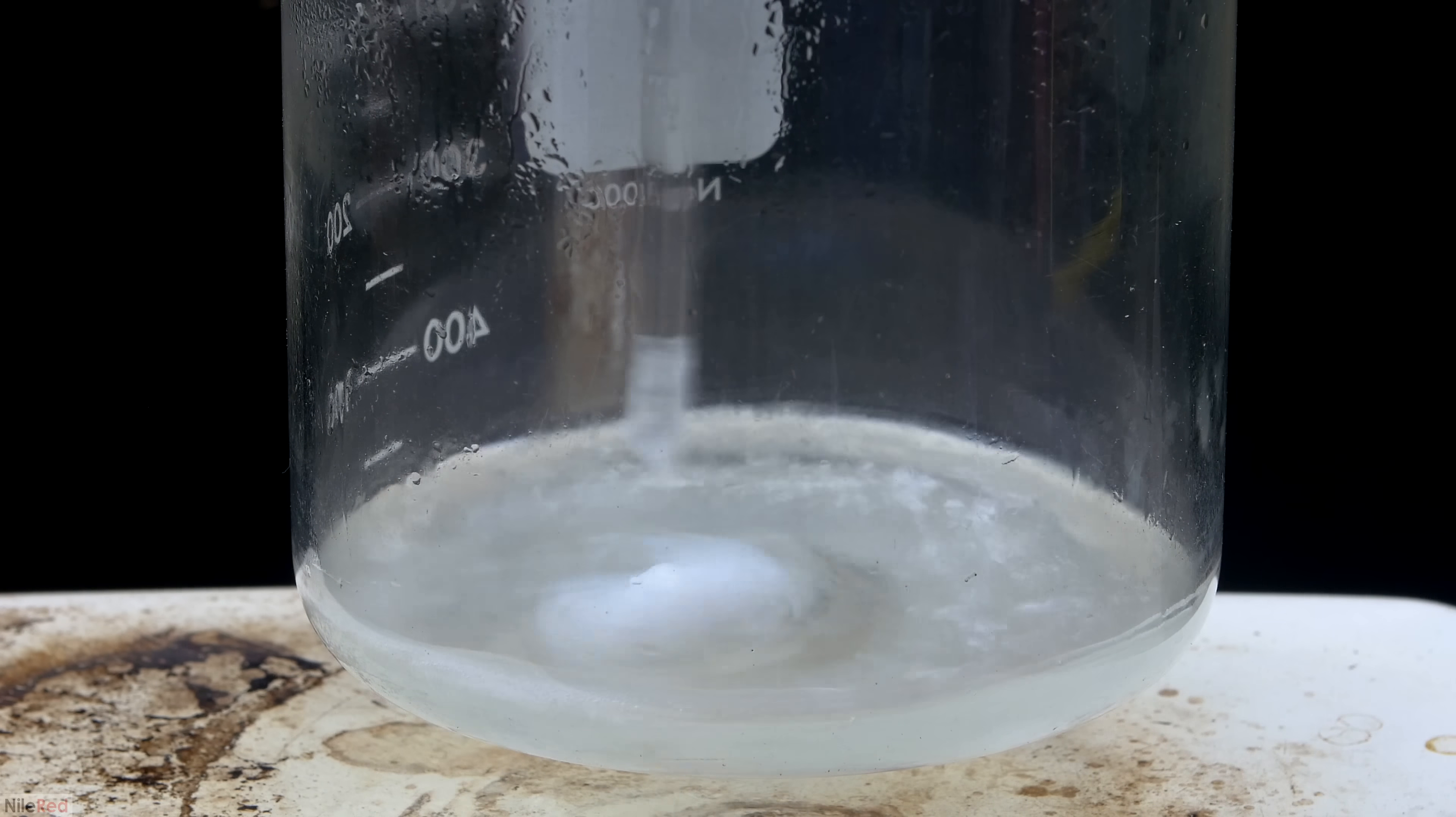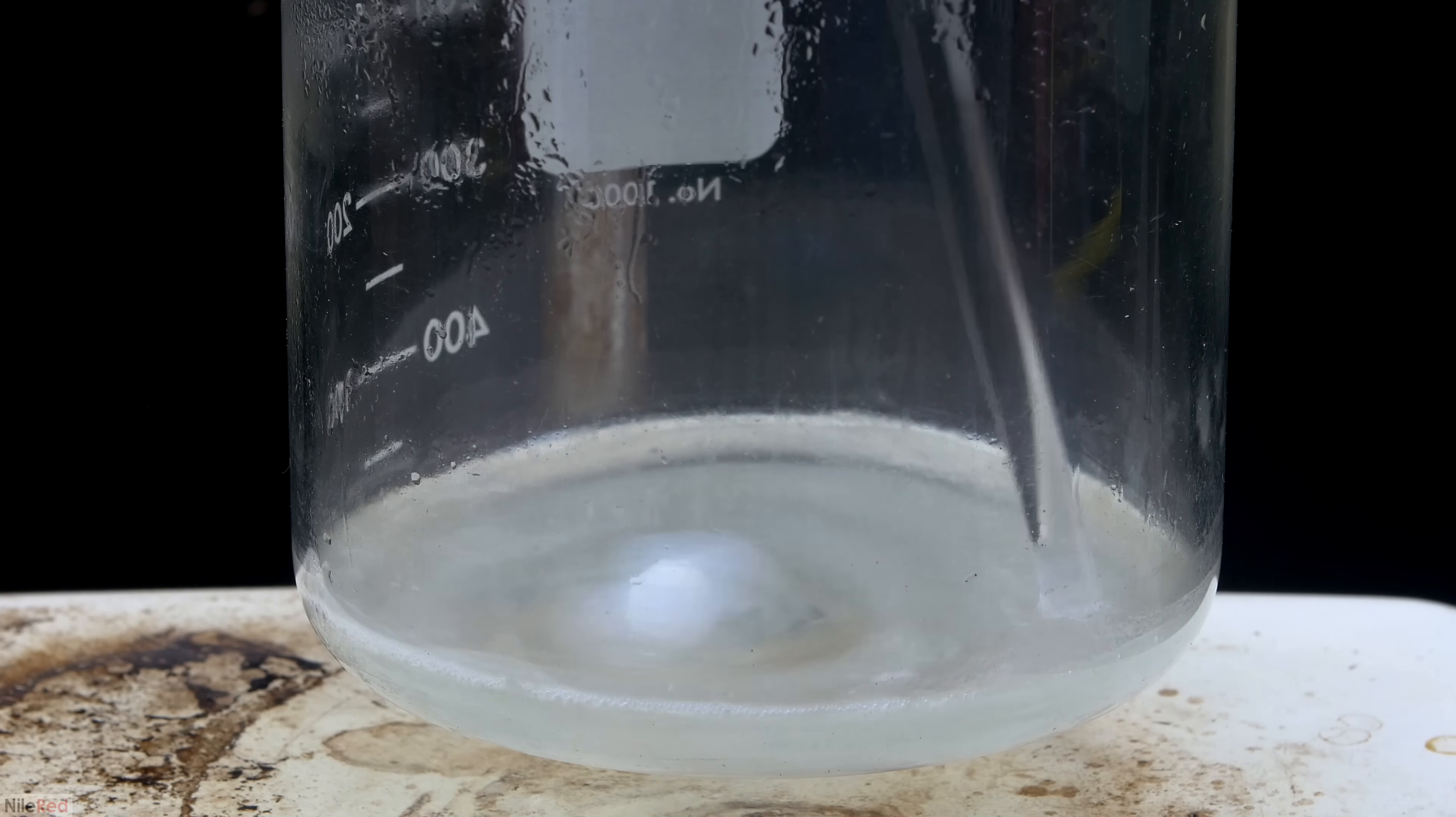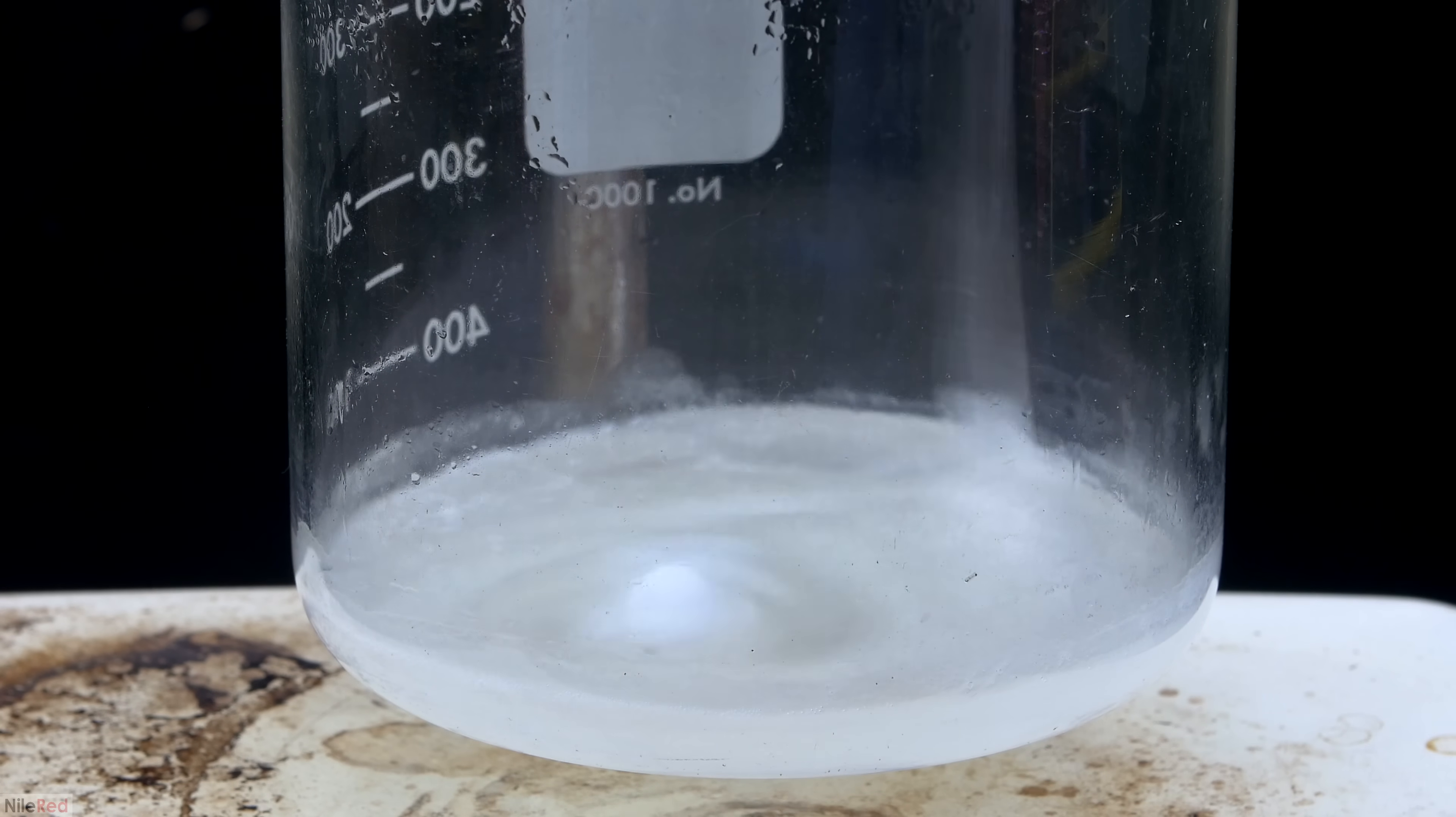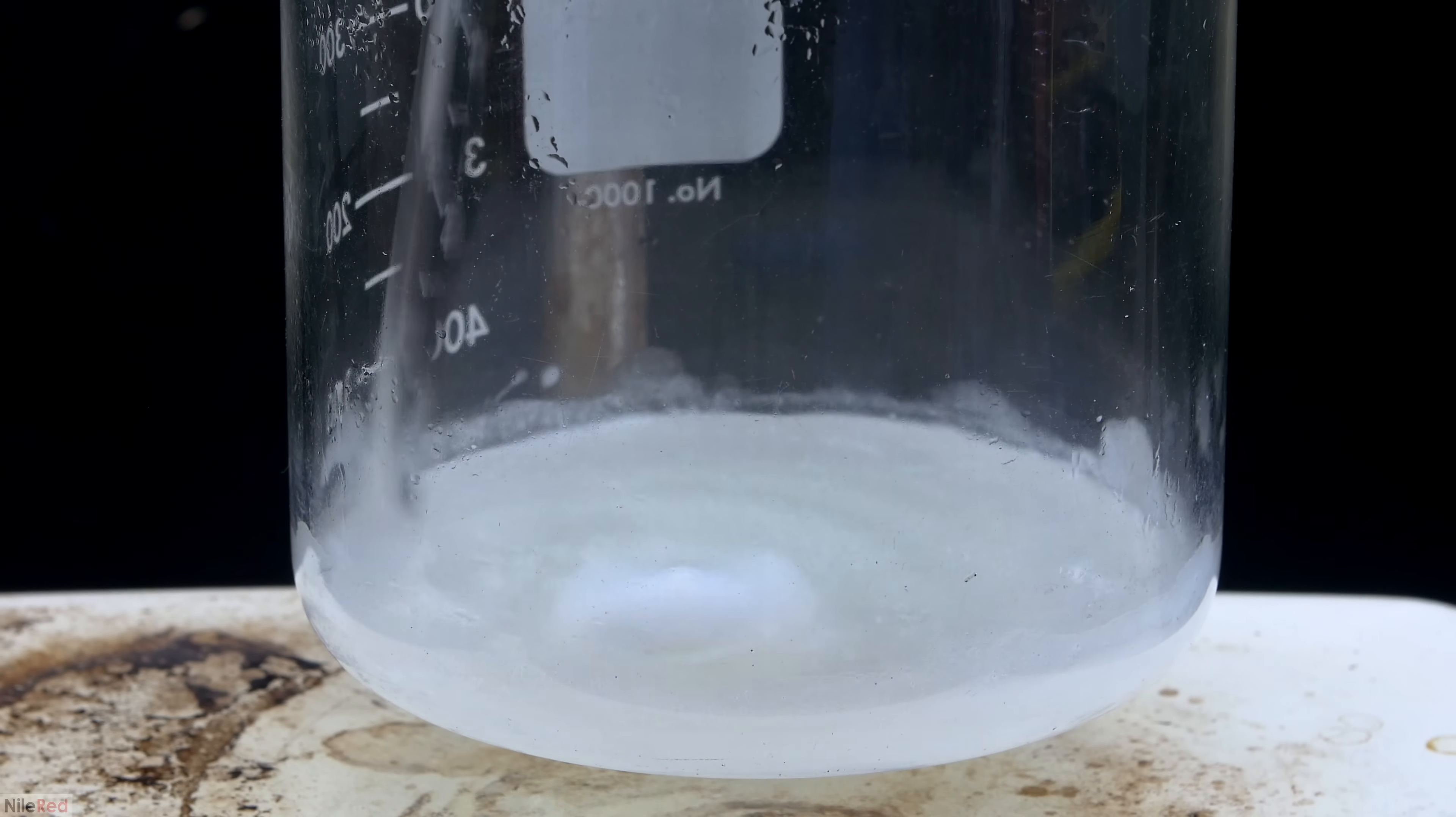The anhydrous form of mercury(II) nitrate doesn't melt at such a low temperature, so it crystallizes out as a solid as soon as it forms. This final drying step of our mercury(II) nitrate is extremely slow, so it's important to have patience.